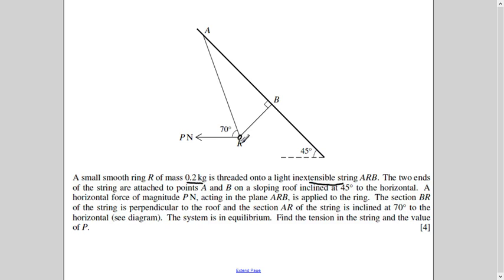Secondly, the force which is P applied at the ring horizontally in this direction, making an angle 70 with AR. And the section BR is perpendicular. So whatever is drawn here is explained here in the words. The system is in equilibrium.